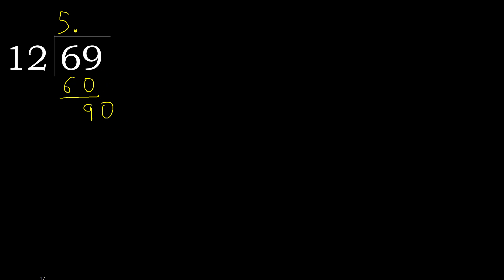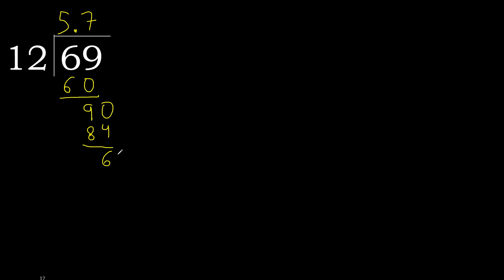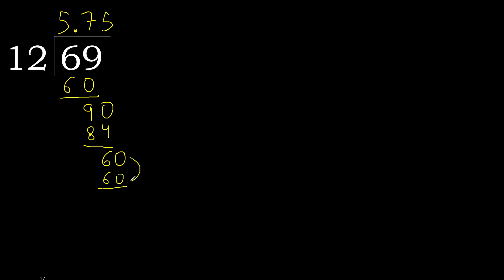12 multiplied by 8 is greater. 12 multiplied by 7 is 84, which is not greater. Subtract. Complete. Complete point. Bring down 60. 12 multiplied by 5 is 60, which is not greater. Subtract.